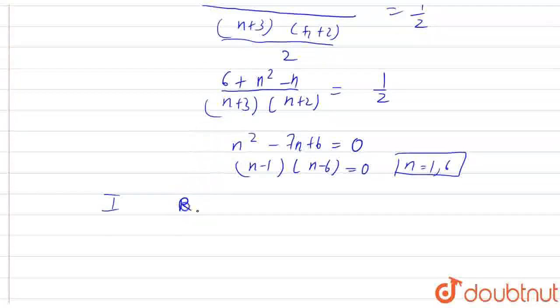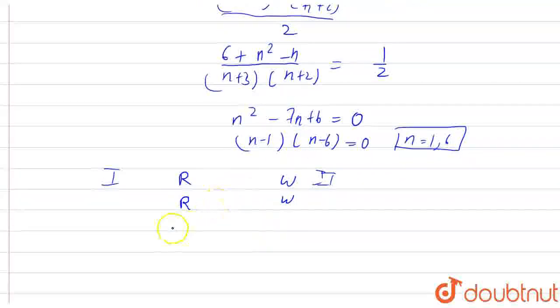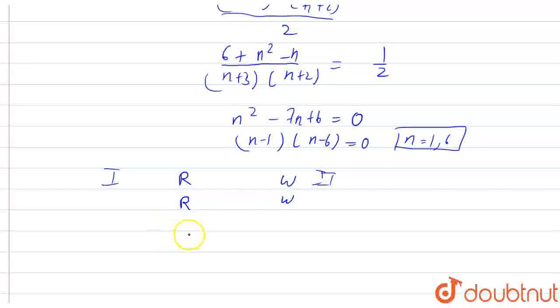In the first draw he took out red and in the second draw he again took out red, or in the first case he took out white and on the second draw he again took out white. So there are 2 cases here because the color is the same on both sides.